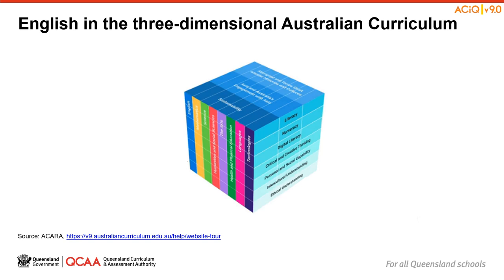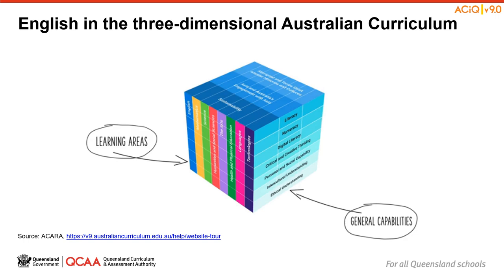The diagram on screen visually represents these three dimensions. The Australian Curriculum consists of eight learning areas, with English indicated in blue. Then there are the seven general capabilities: Literacy, Numeracy, Digital Literacy, Critical and Creative Thinking, Personal and Social Capability, Intercultural Understanding, and Ethical Understanding. You'll notice the name change of the ICT general capability to Digital Literacy, to reflect current understandings in the field.